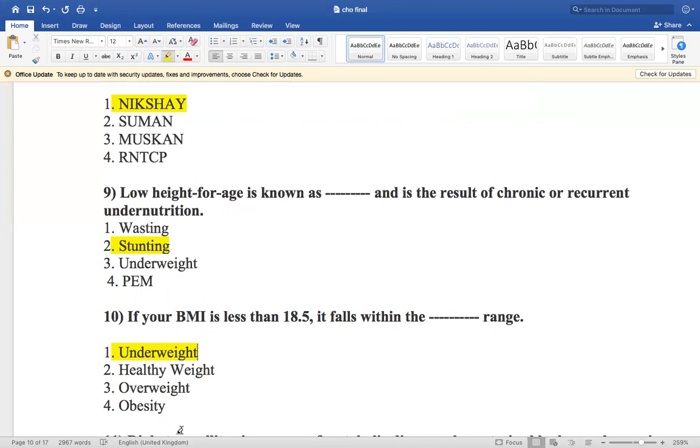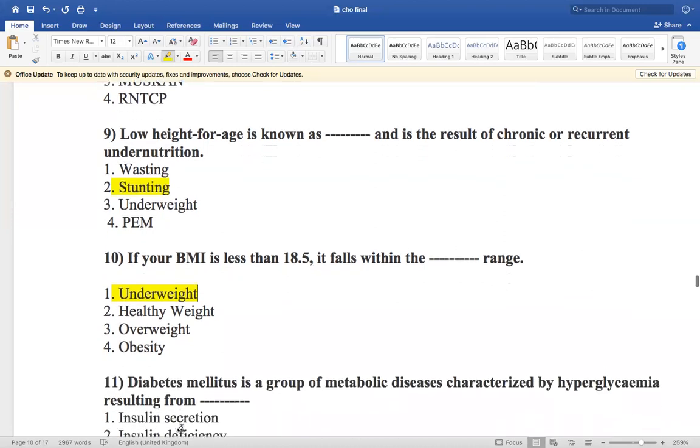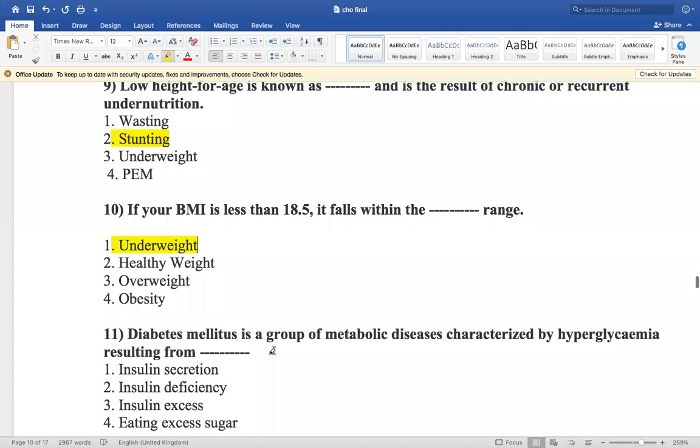Obese 1, obese 2, and obese 3 classification. Now the next question is: diabetes mellitus is a group of metabolic diseases characterized by hyperglycemia resulting from insulin secretion, insulin deficiency, insulin excess, or eating excess sugar. So diabetes mellitus is characterized by hyperglycemia. It is due to insulin deficiency.